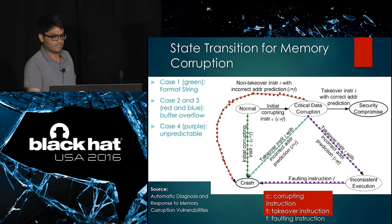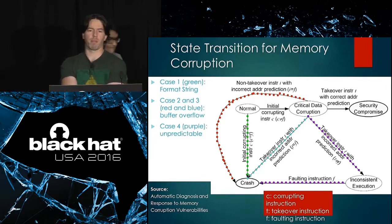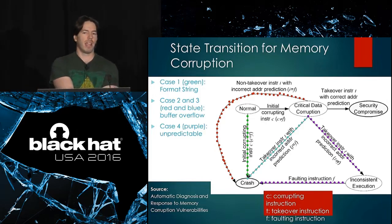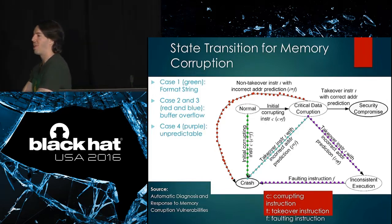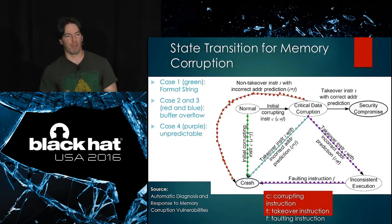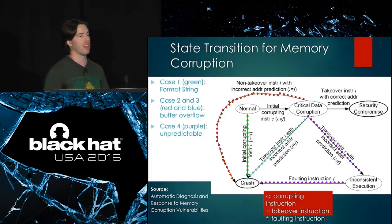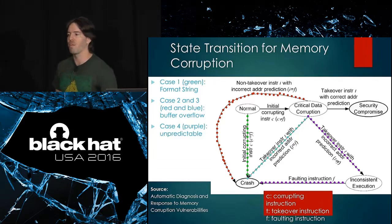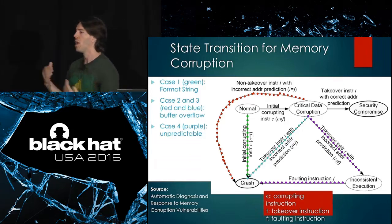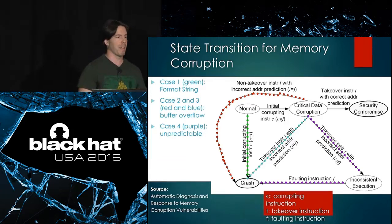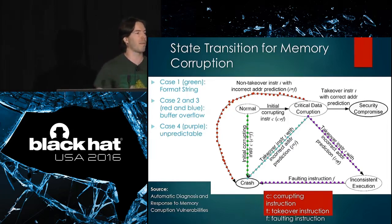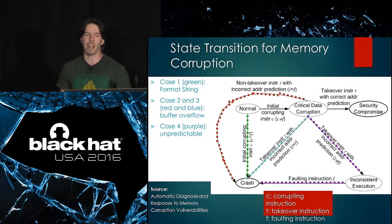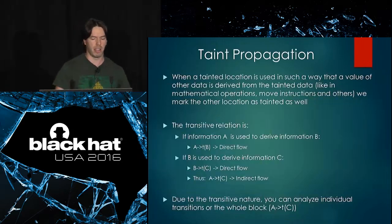When looking at memory corruption vulnerabilities, you don't always have a direct relation between a crash and the offending instruction. In heap overflows for example, you might corrupt something that only crashes much later. So it's not trivial to define whether a condition is under attacker control or giving the attacker a primitive. That's why we're not trying to fully automate — we need an analyst behind the tool to do the analysis.